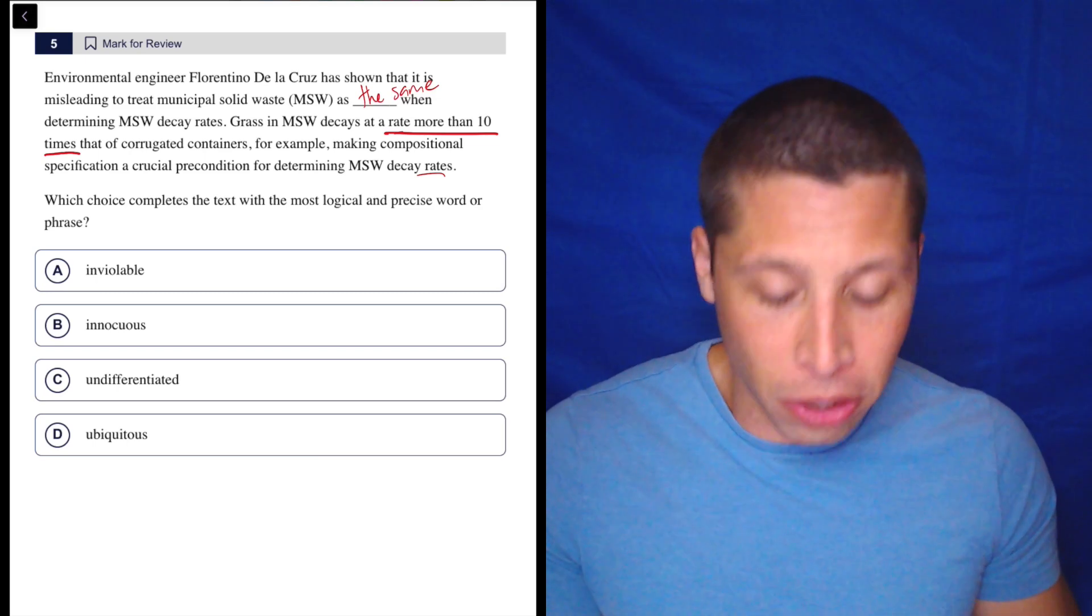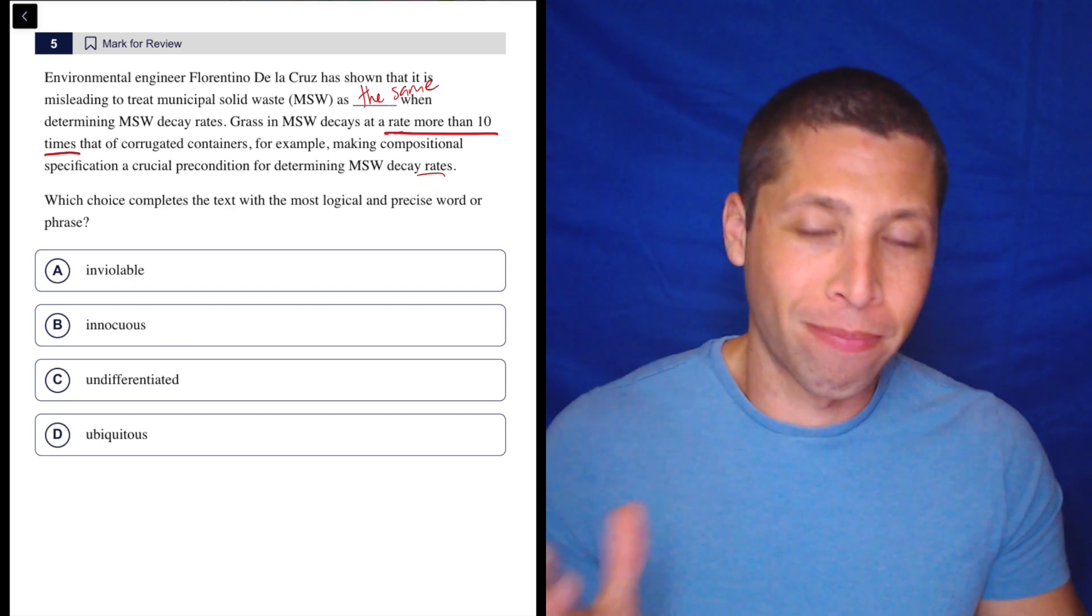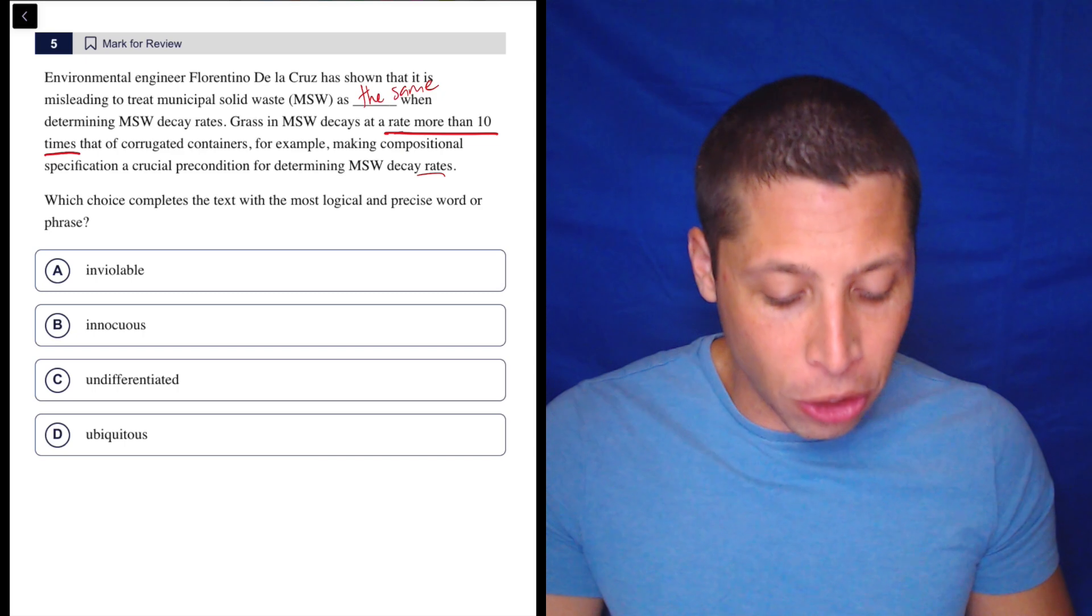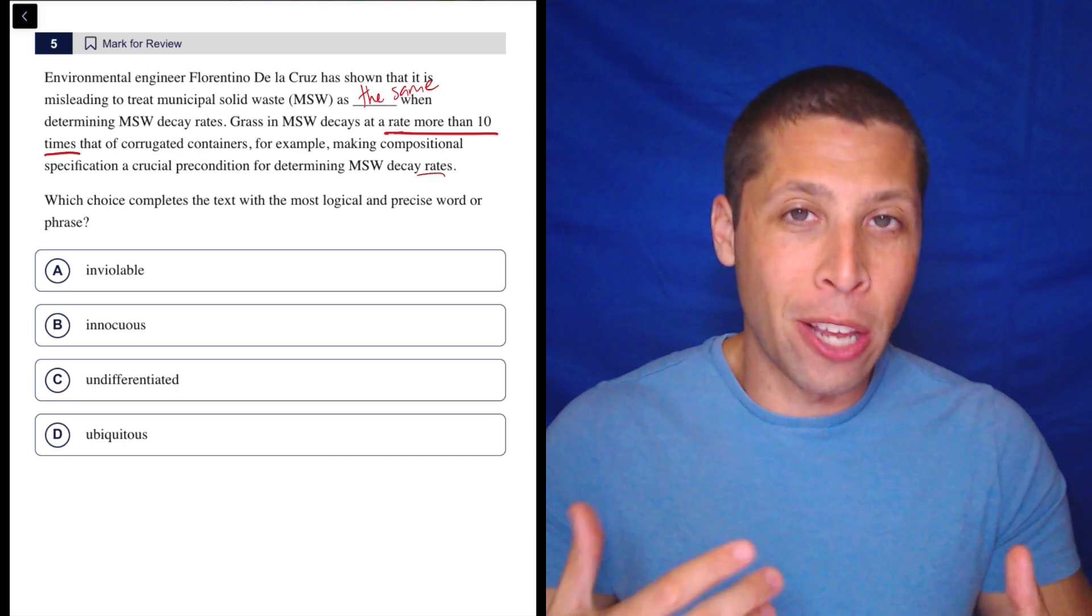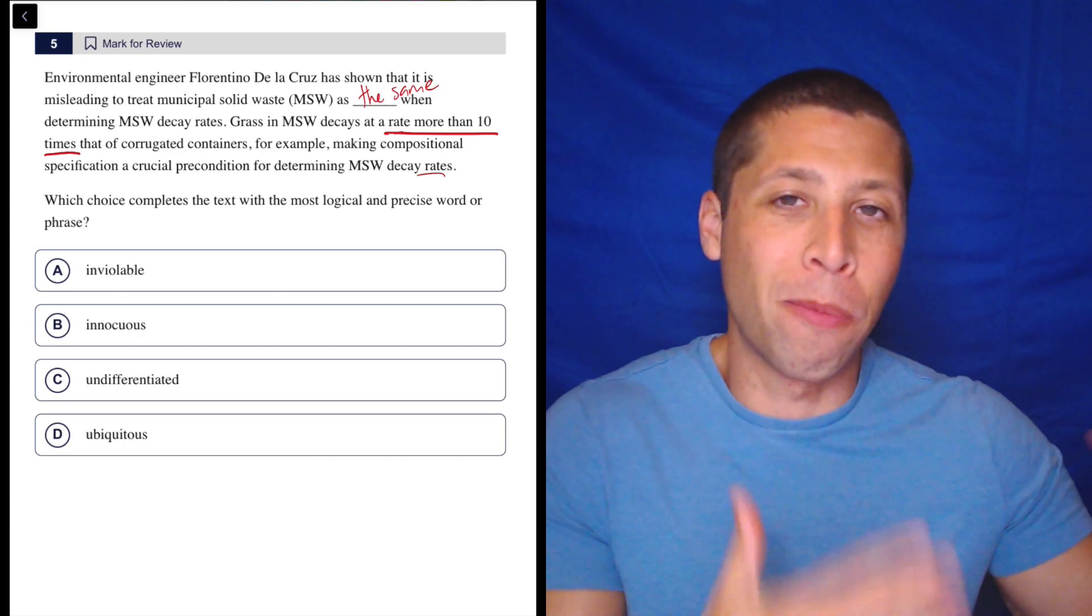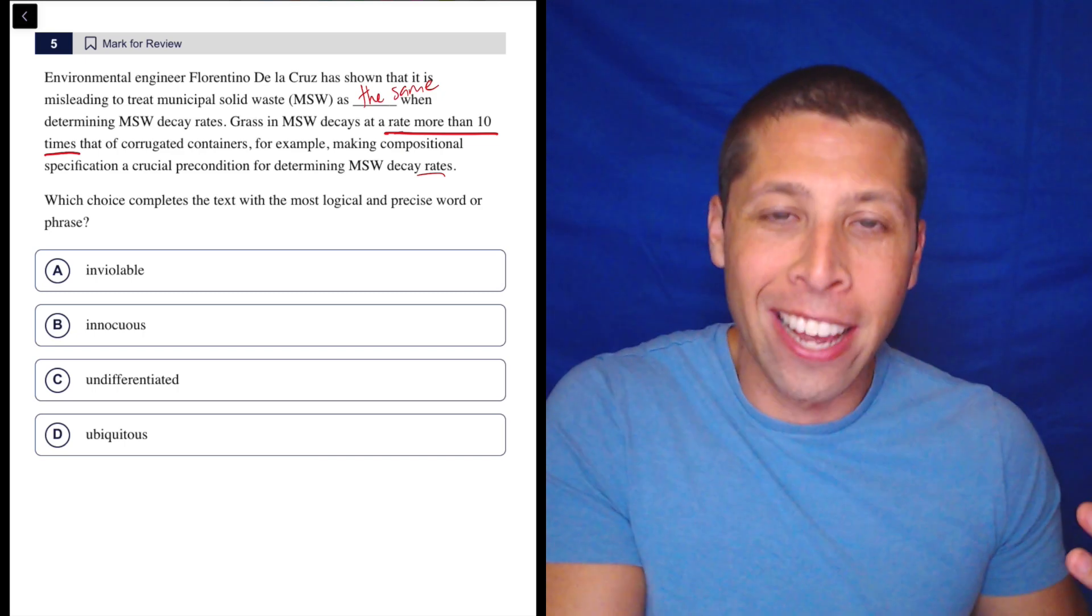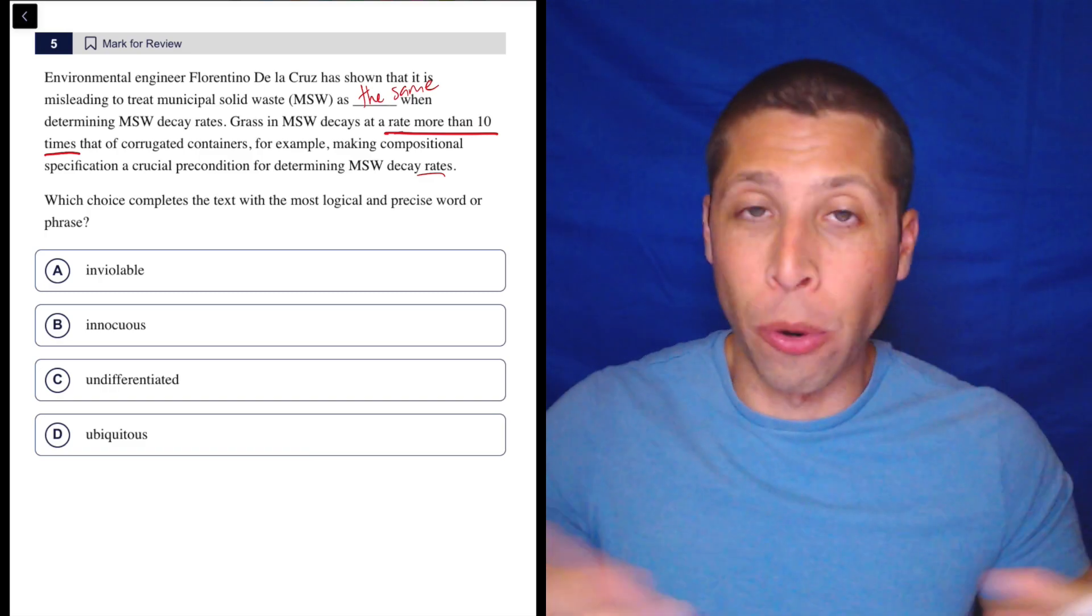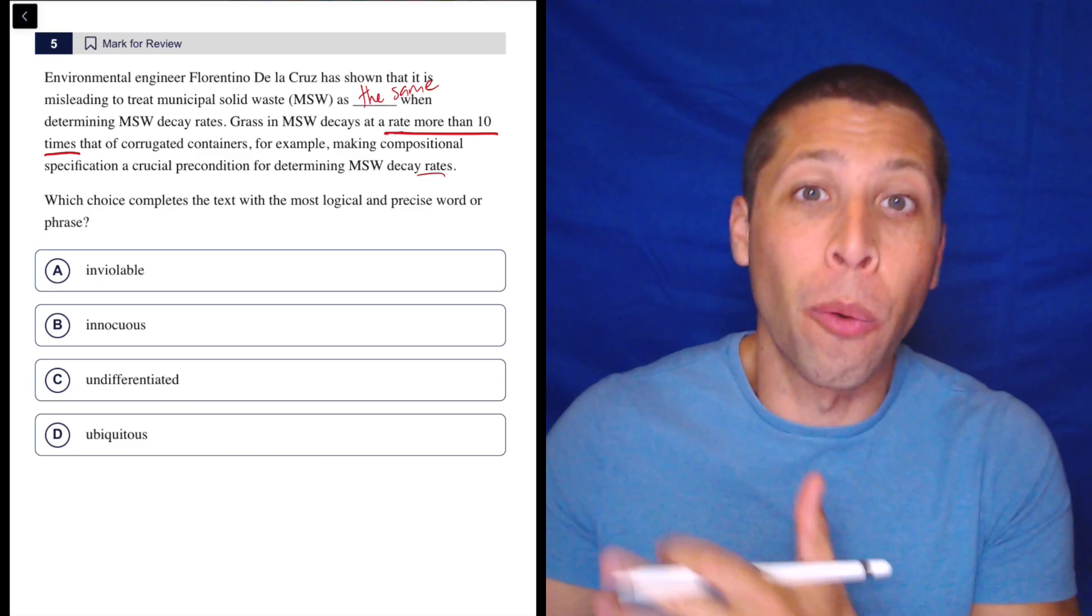making compositional specification, meaning like what it's made of and specifying what it's made of, a crucial precondition for determining the rate. Meaning in order to determine how much it's going to decay, you need to know what it's made of. It's a precondition. It needs to happen before in order for you to know the rate. You got to know what it's made of.